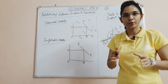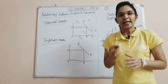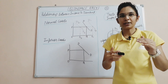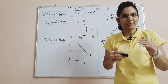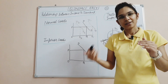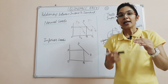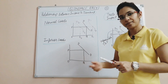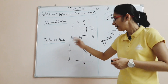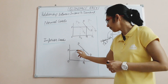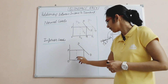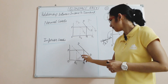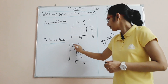For inferior goods — low quality food — if your income increases by 50-60%, you will reduce consumption of low quality food. So as income increases, the demand for inferior goods decreases — the demand curve shifts backward to a new lower demand curve.